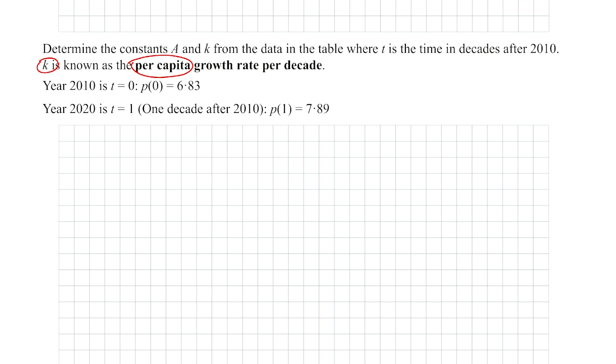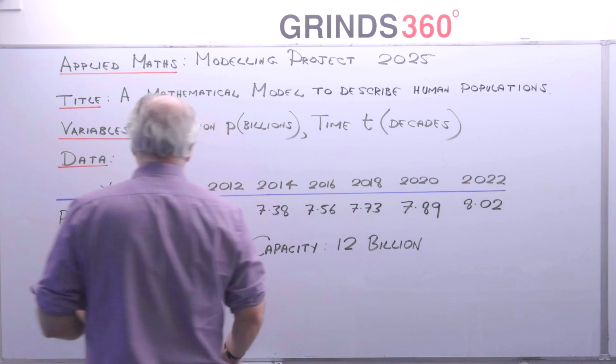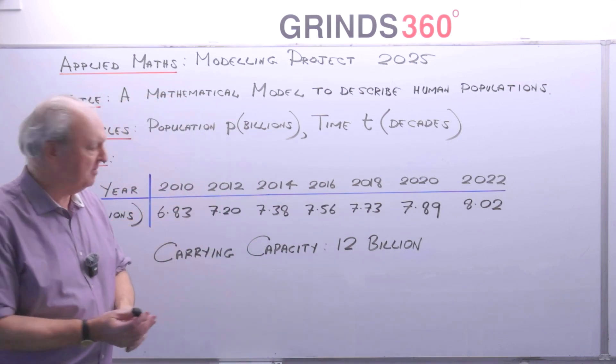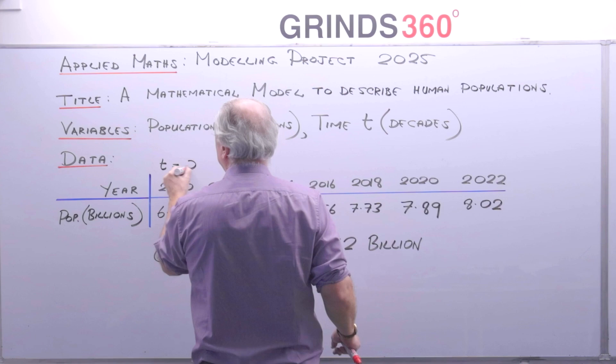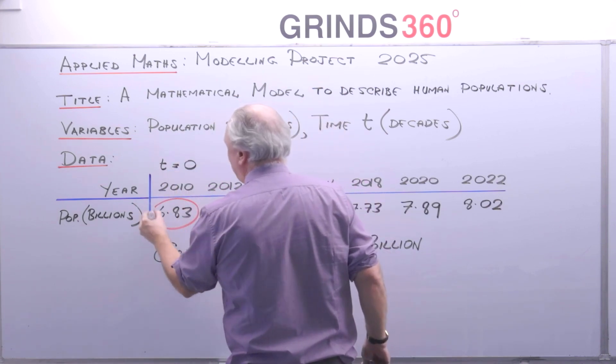Well what's my extra information? Well we're starting with the year 2010. So we put time is equal to zero there and the population you'll get from your table is 6.83 billion. And then one decade later because I'm putting time in decades that's 2020, t is now equal to one. One decade after that and the population there is 7.89 billion. So if you look at your table of results, here's our table. So we're going to start here 2010. So we're going to have t is equal to zero there. The population is 6.83 billion.